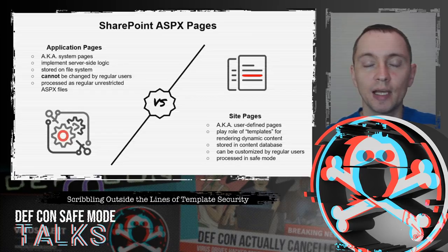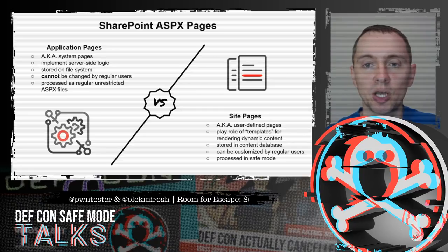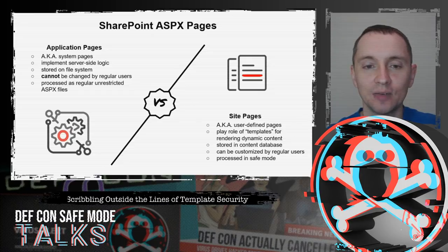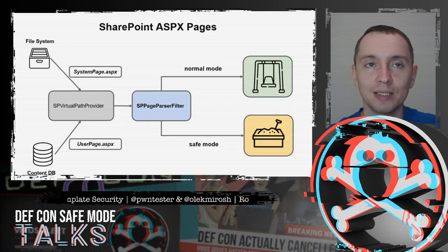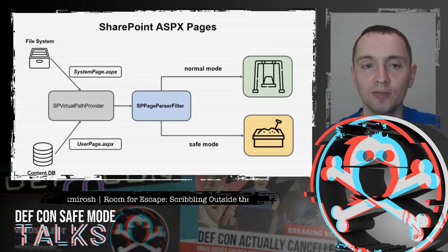SharePoint has two types of ASPX pages. The first type is application pages — part of SharePoint server implementing application logic, stored on the file system, not changeable by users, and processed without any restrictions. The second type is site pages, stored in the database and customizable by users. SharePoint processes them in a special mode known as safe mode — they are more like templates for presenting dynamic content. Based on the virtual path, SPPageParseVirtual decides whether to apply safe mode or process as an application page without restrictions.